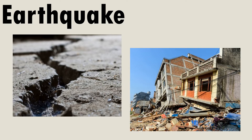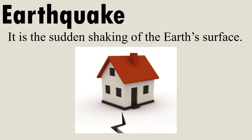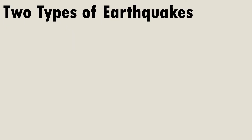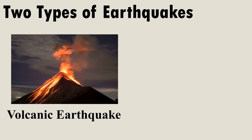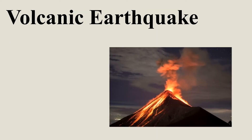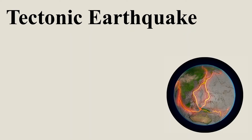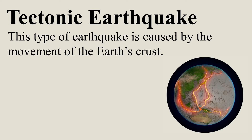Earthquake — it is the sudden shaking of the earth's surface. There are two types of earthquakes: volcanic earthquake and tectonic earthquake. A volcanic earthquake happens with a strong volcanic eruption. A tectonic earthquake is caused by the movement of the earth's crust.